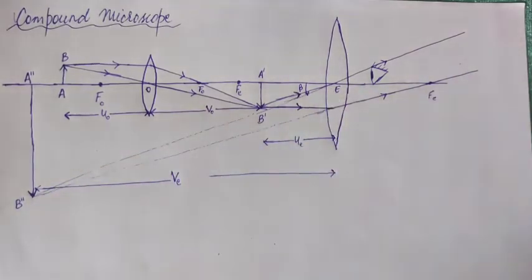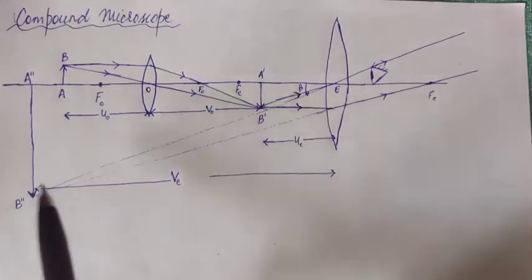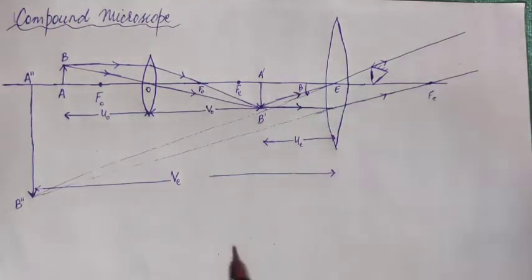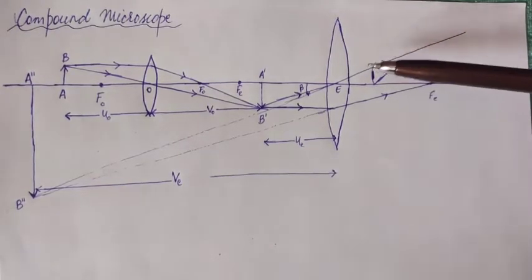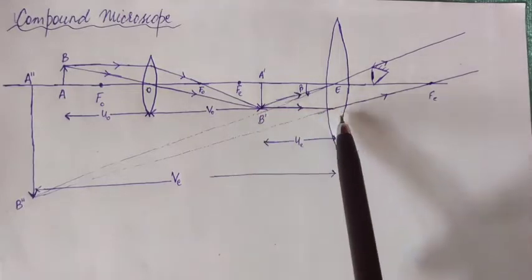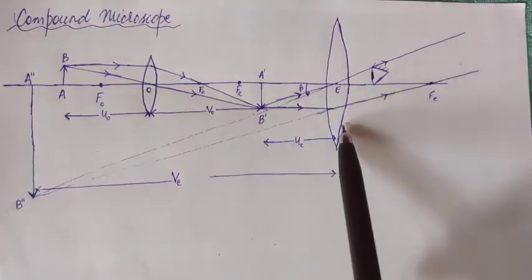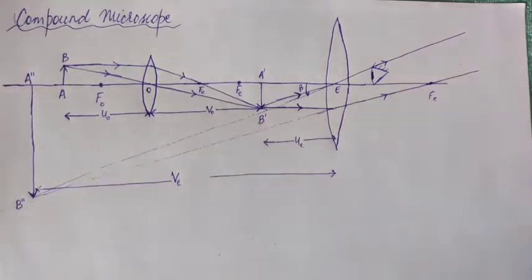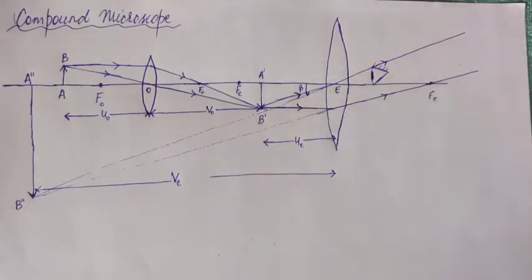You need to learn to draw this picture properly — use rulers and draw it carefully. The eyepiece is basically acting like a simple microscope. In a simple microscope, an object placed in front of a convex lens or magnifying glass forms a virtual image. That is exactly the case with the eyepiece as well, so the eyepiece is acting like a simple microscope.